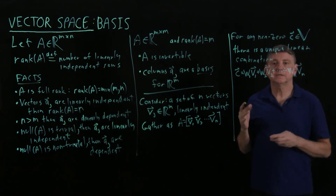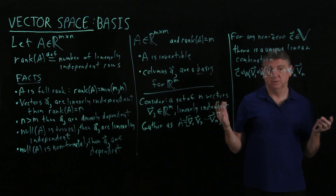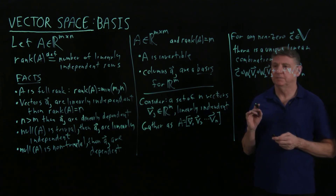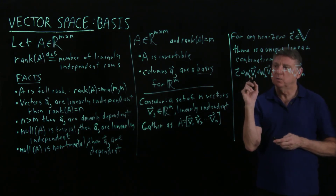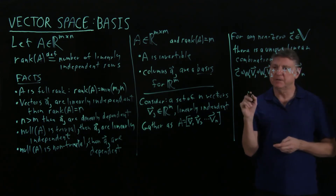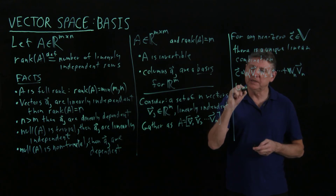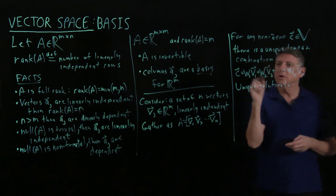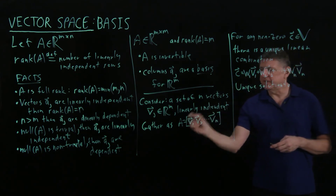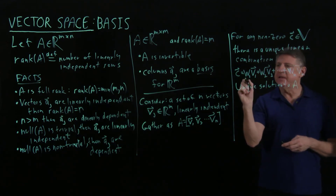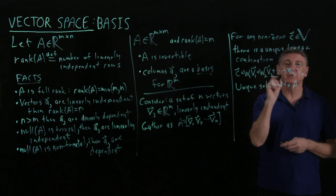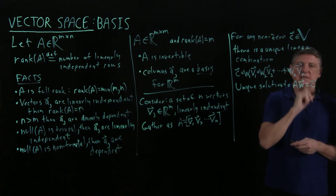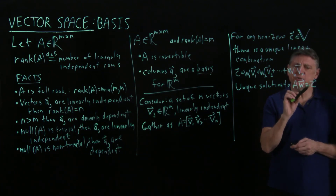The proof of this takes several forms, most involving reasoning by contradiction. Converting this into matrix-vector form: if we gather the vectors as A and the scalars W1, W2, through W_N as a vector W, then AW = C, and there is a unique solution for W.